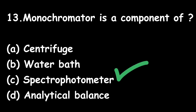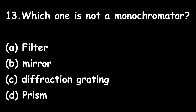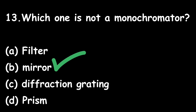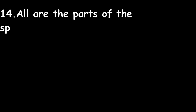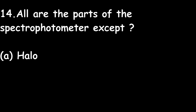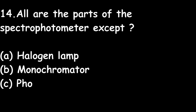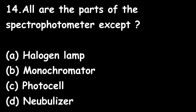Monochromator is a component of spectrophotometer. Next question: Which one is NOT a monochromator? Option A: filter; Option B: mirror; Option C: diffraction grating; Option D: prism. A monochromator means a wavelength selector. The right answer is Option B — mirror is not a monochromator. Question 14: Which of the following is NOT a part of the spectrophotometer? Option A: halogen lamp; Option B: monochromator; Option C: photocell; Option D: nebulizer. The right answer is Option D — nebulizer is a part of flame photometer, not spectrophotometer.